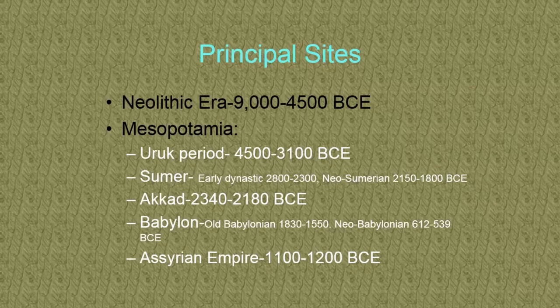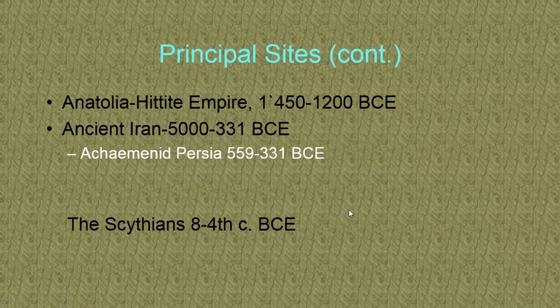The Neolithic era spans around 5,000 years — between 9,000 and 4,500 BCE — and then Mesopotamia starts with the Uruk period around 4,500 to 3,100 BCE. They sort of move out of the Neolithic age into a more advanced population, though it's gradual. The study of these periods has a lot to do with technology as well.